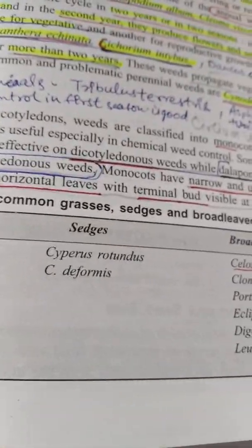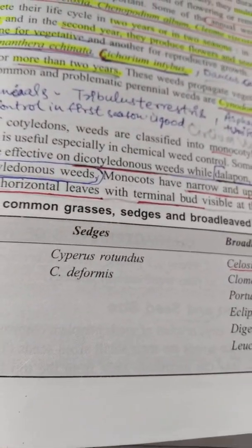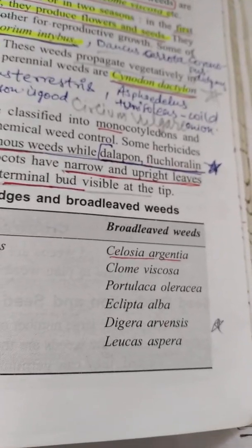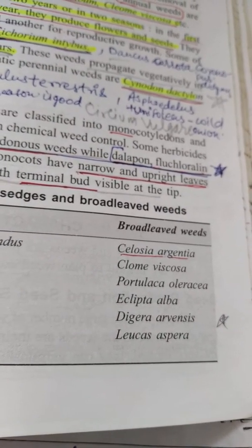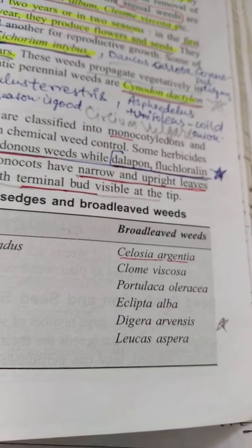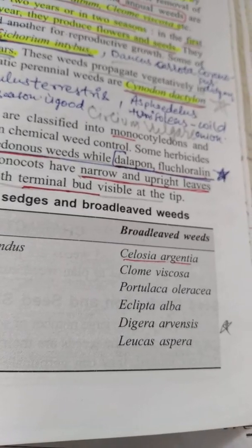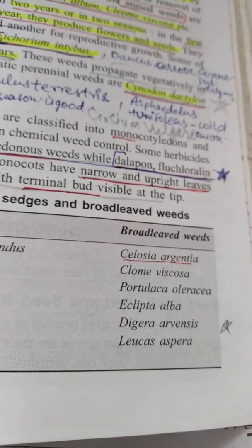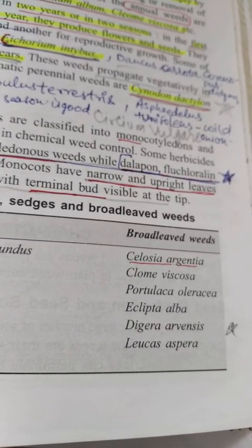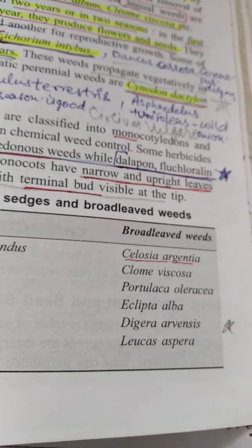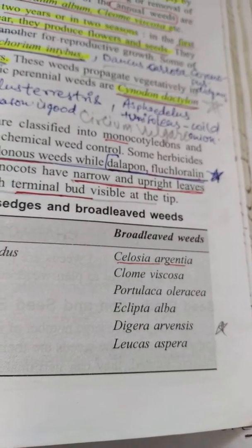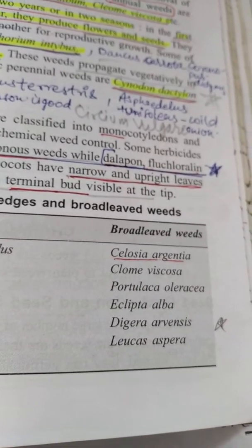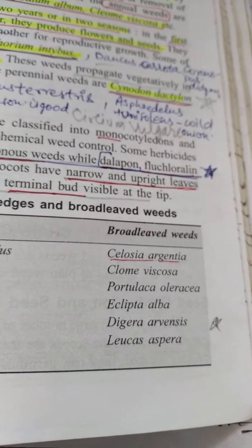Broad leaf weeds include Celosia argentea, Cleome viscosa, Portulaca oleracea, Eclipta alba (Bhrangraj), Tephrosia purpurea, Argemone arvensis, and Leucas aspera. Please students, remember them all.